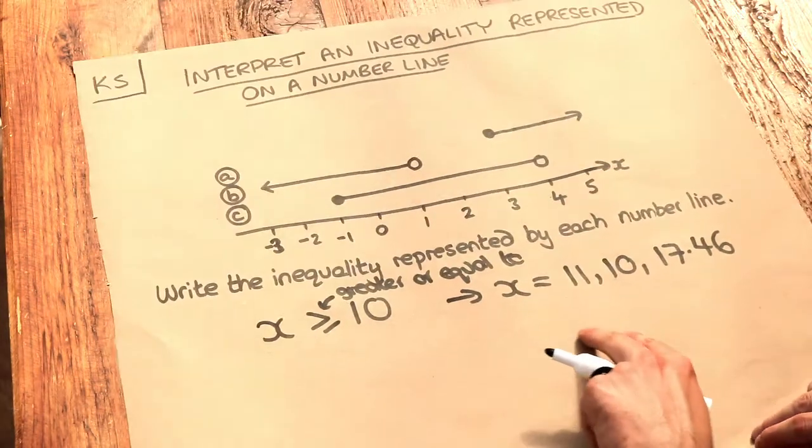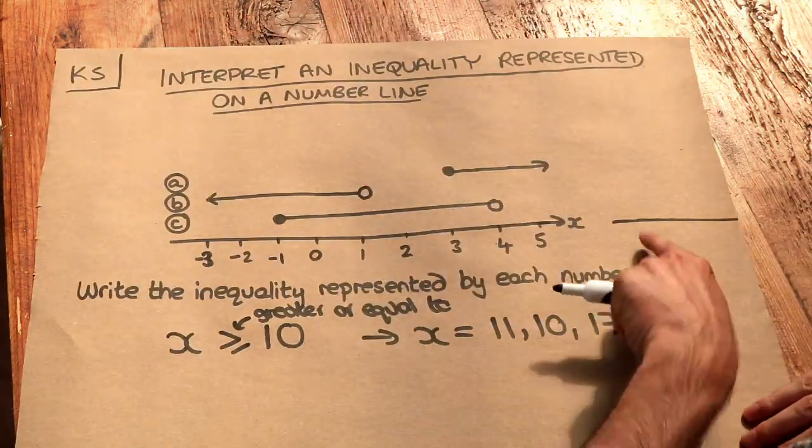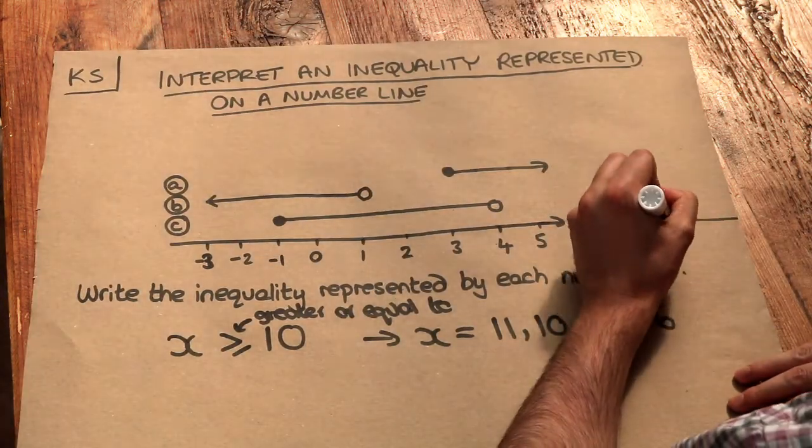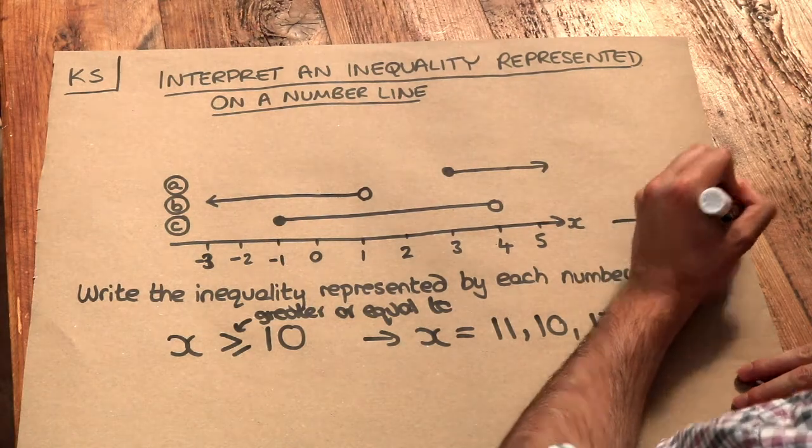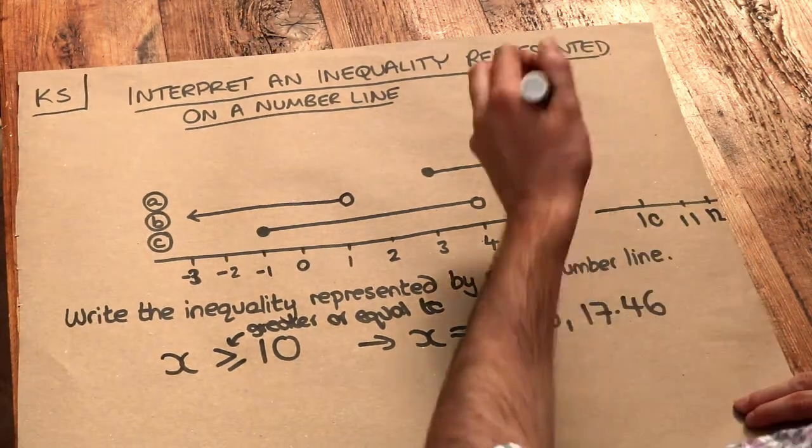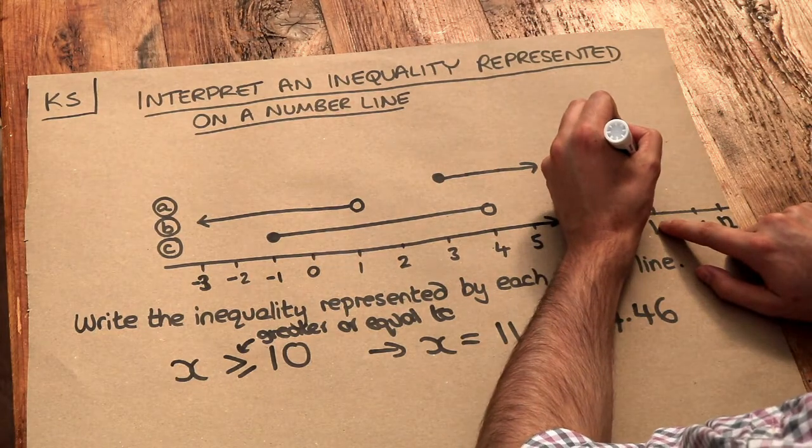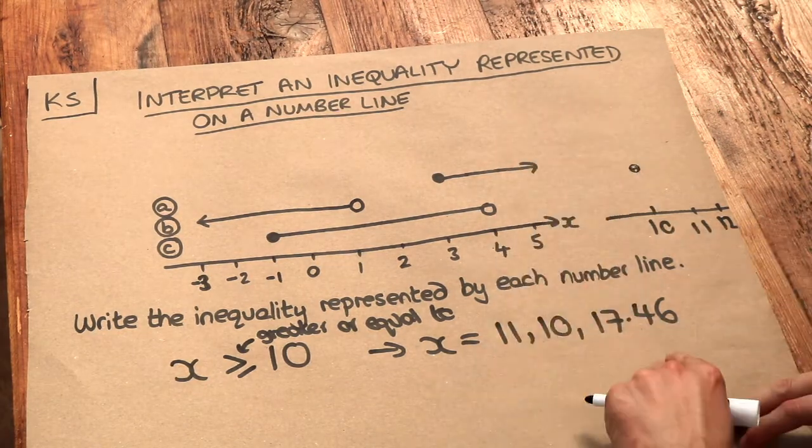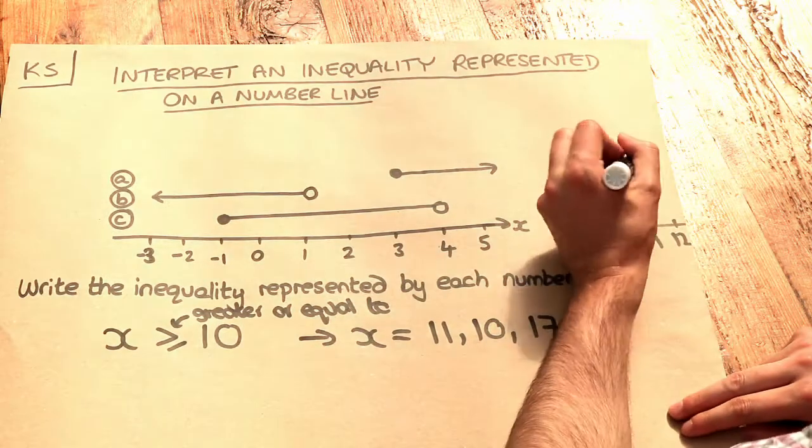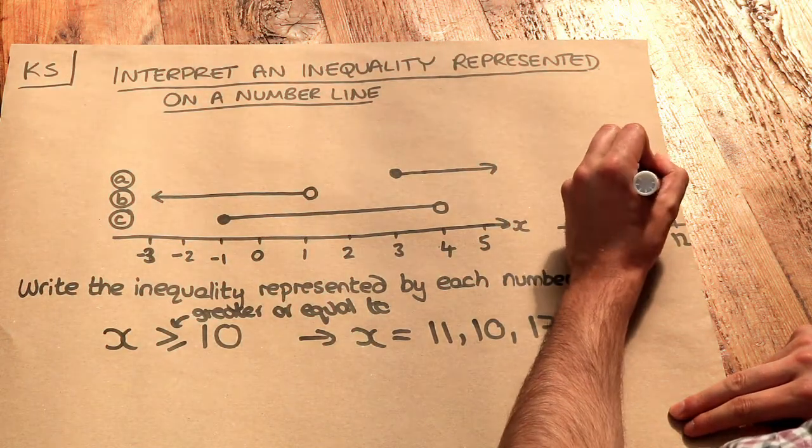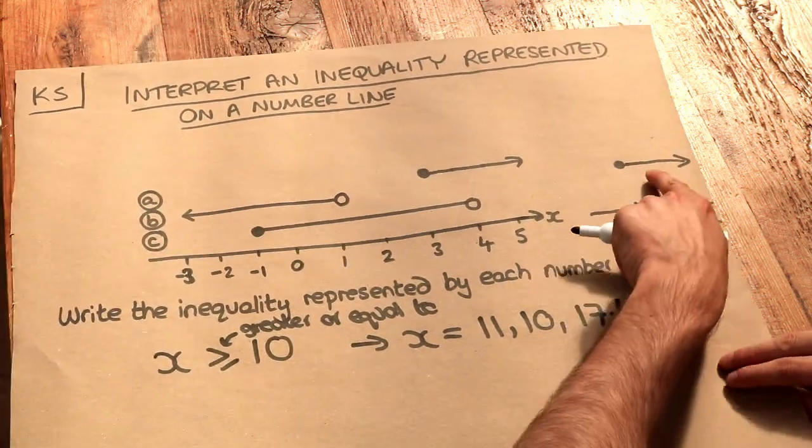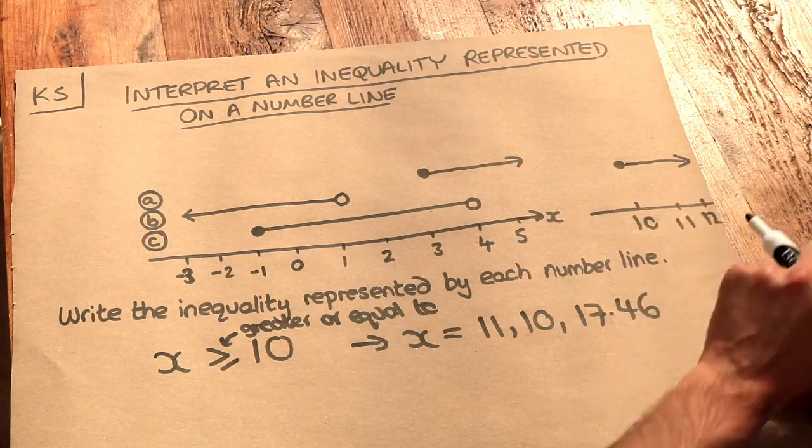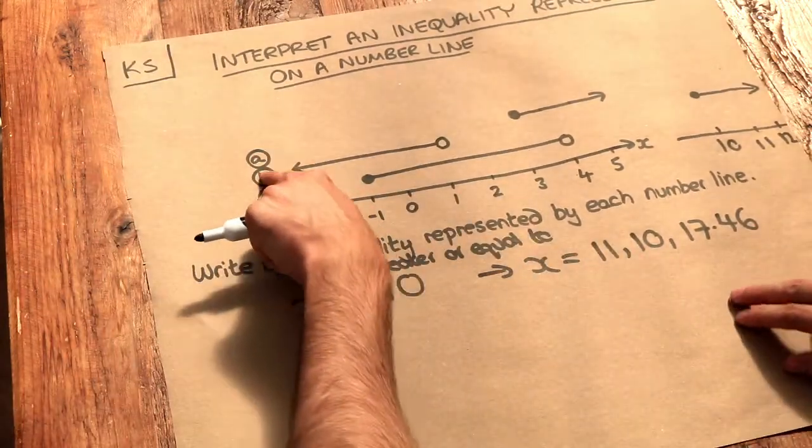Now we could represent that on a number line, because what we could do, if we took this number line up to say 10, we could say that x could be equal to 10, and what we'd do is we'd put a dot on the 10. Or it could be any number greater than 10. And we'd actually do an arrow going up, and that's basically saying that x can be any value greater than it. So let's apply this same principle to a, b, and c here.